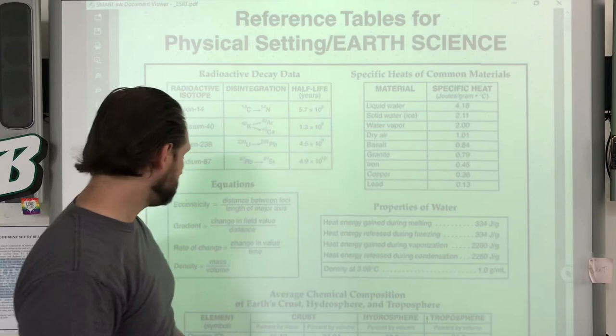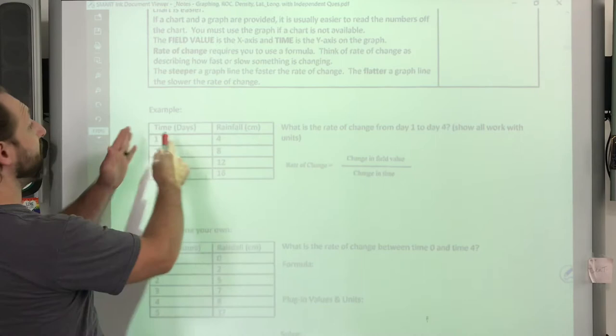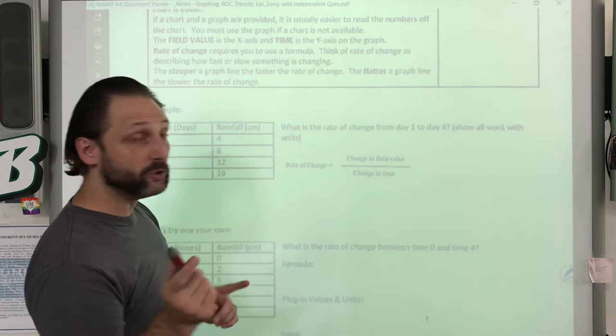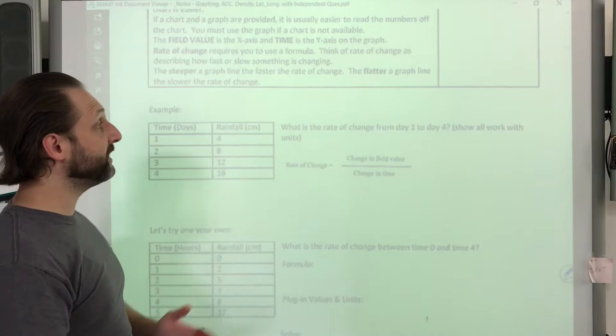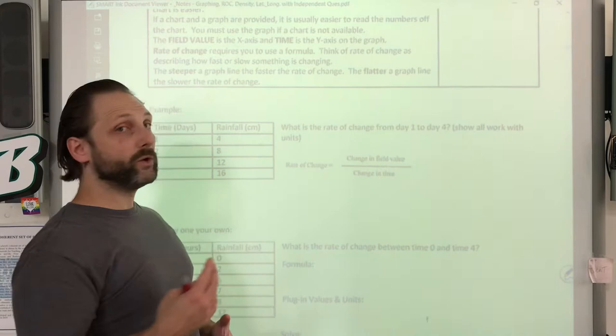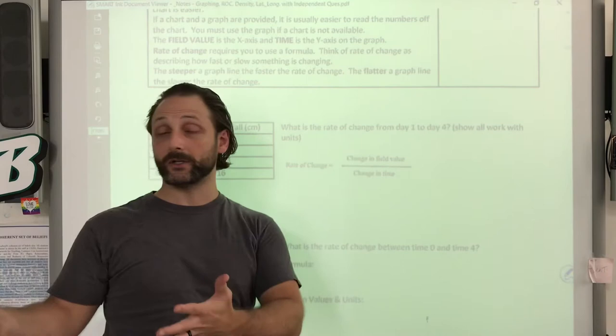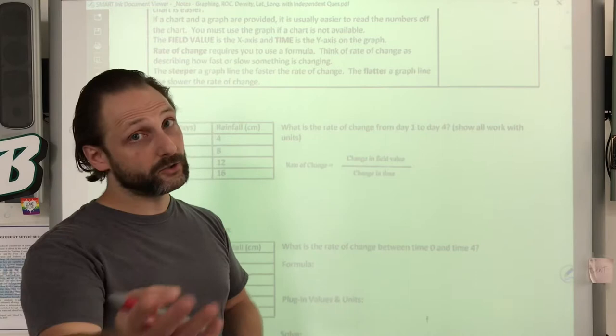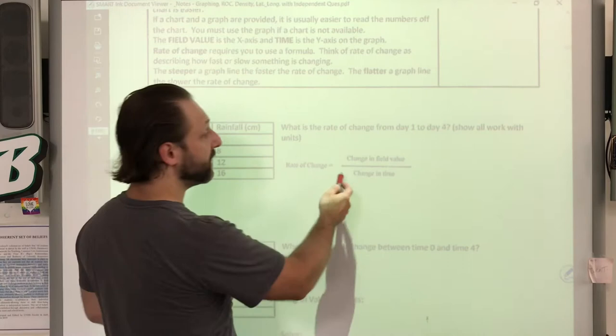Let's come back here. Let's do this one as our example. We've got time in days, we've got rainfall in centimeters. That's what's in the parentheses, the units. We've got four days, four measurements. We want to find out what the rate of change is. So how fast or slow was the change from day one to day four. We're going to show work. Rate of change equals change in field value. So we need to understand what the word change means.